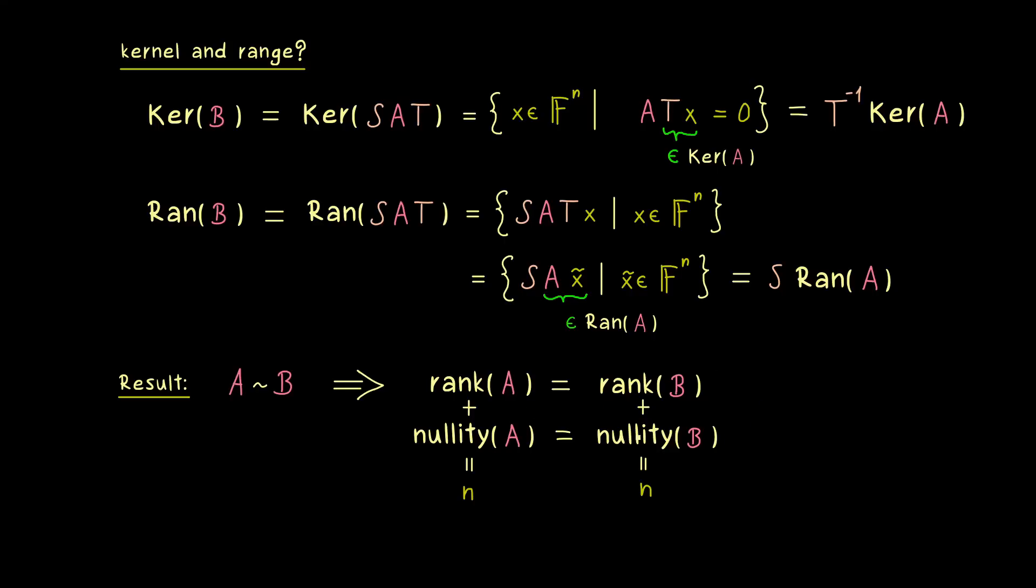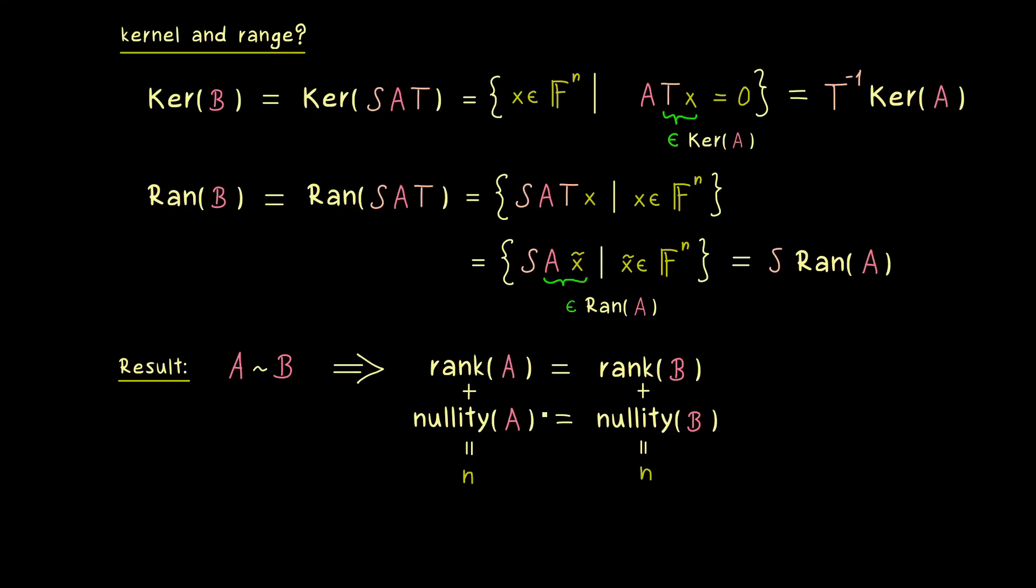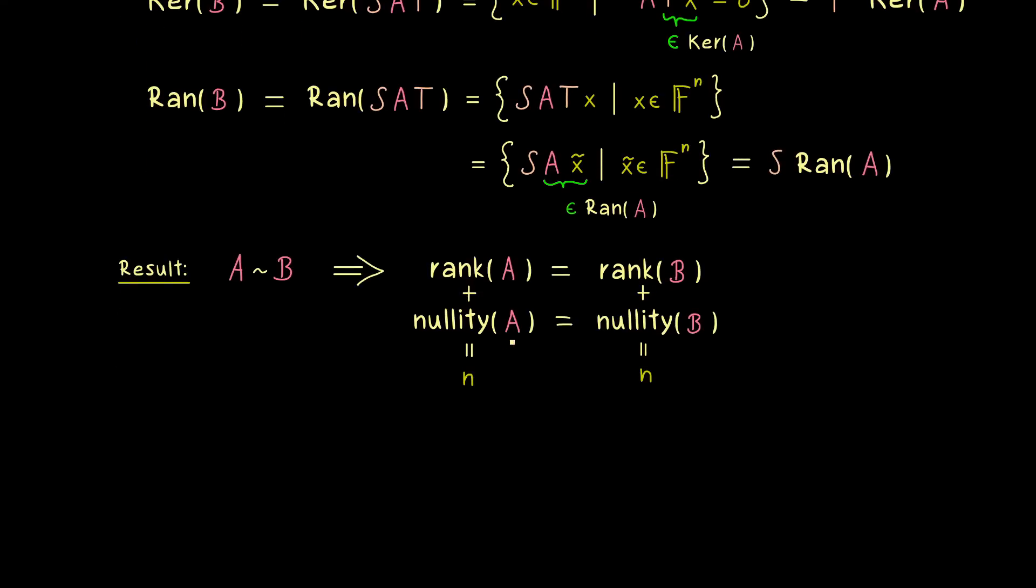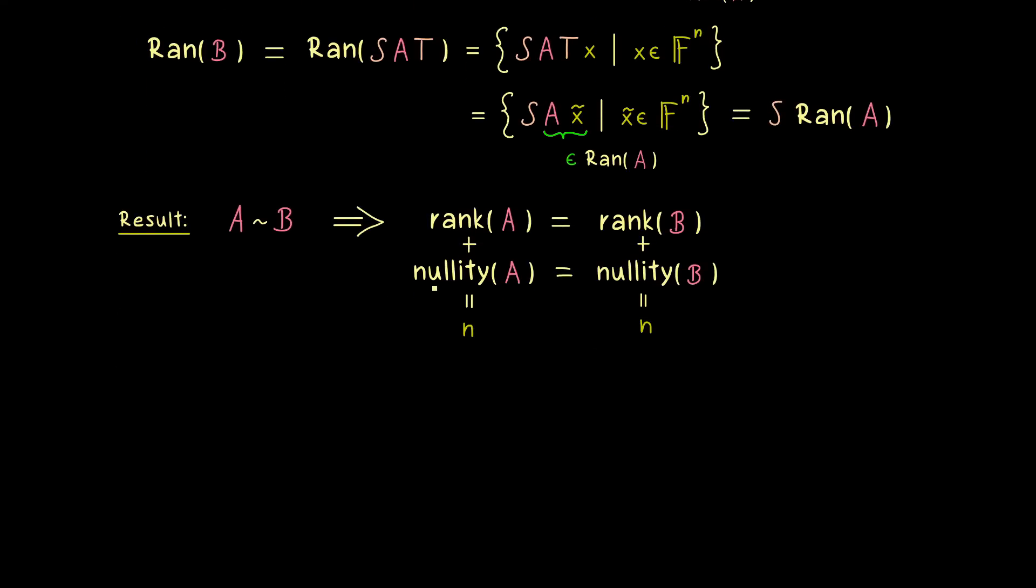And then the next question is, do we also have the converse implication here? This means, if we take two matrices of the same shape and with the same rank, do we also know that they are equivalent? And as we have stated at the beginning of the video, the answer is yes, equivalence is completely described by the rank of the matrix.